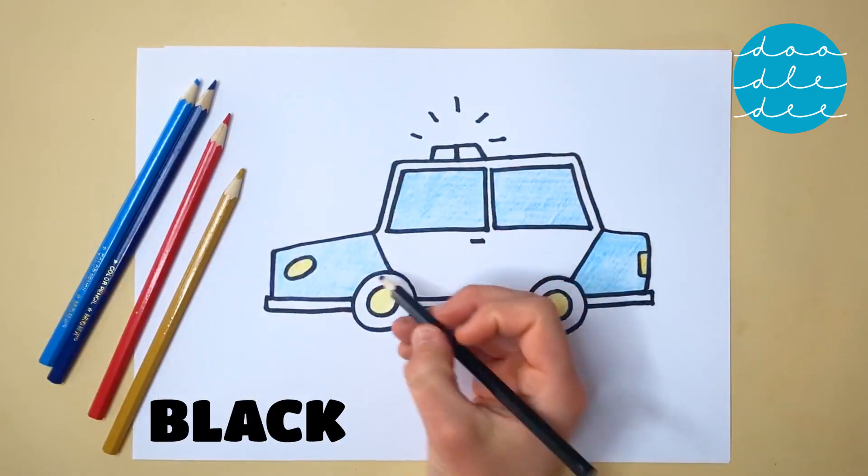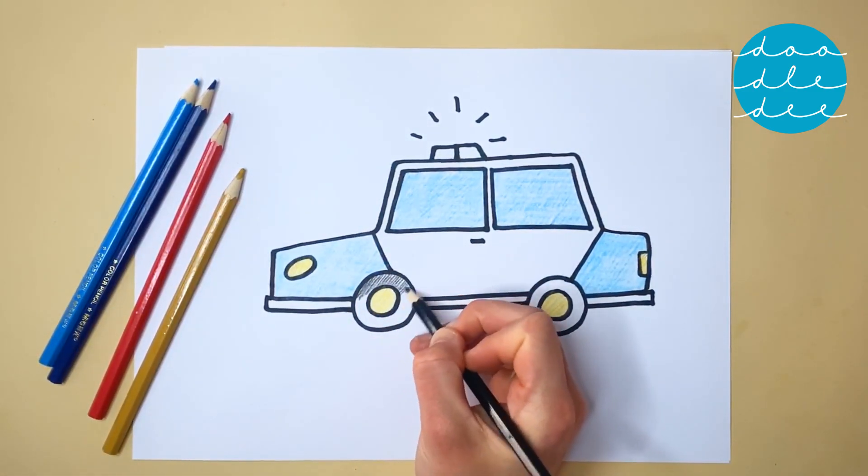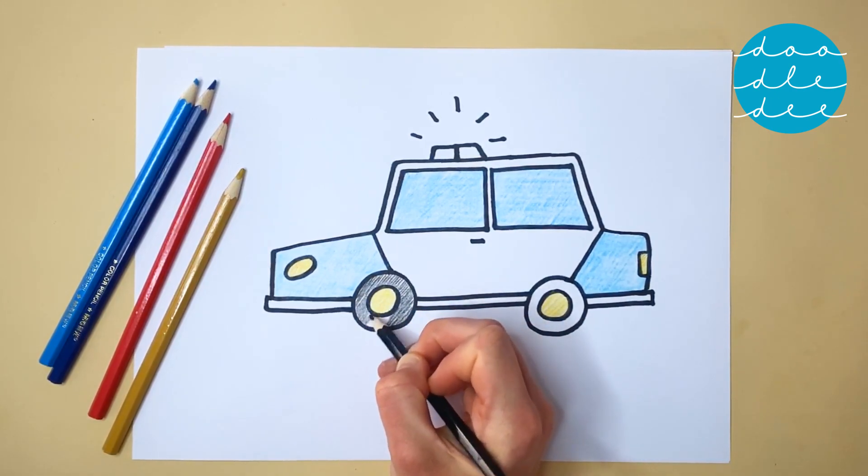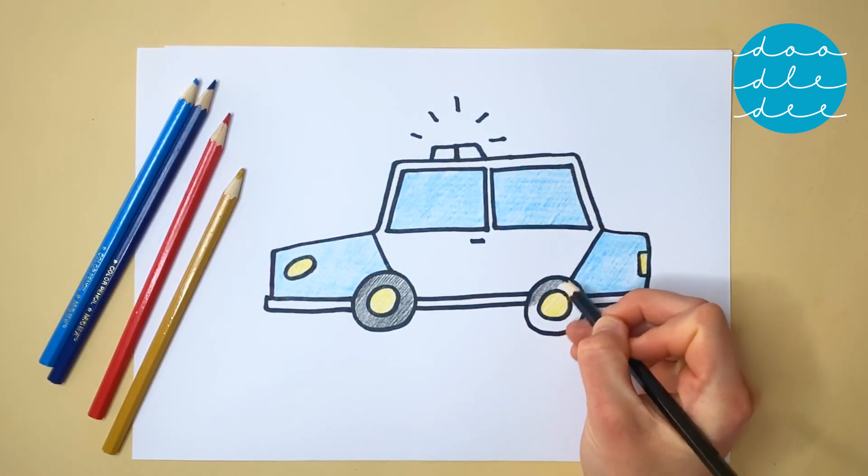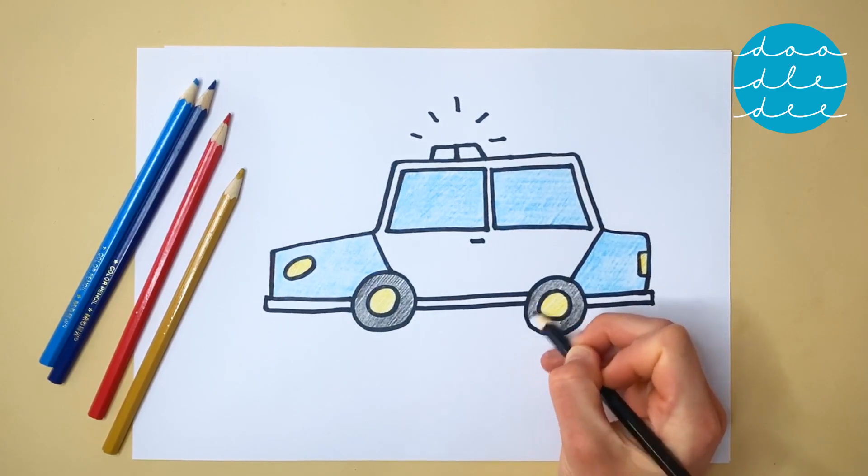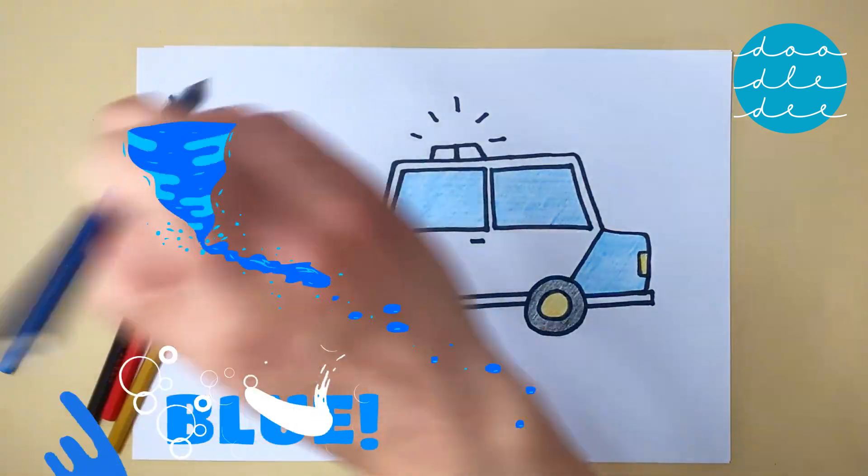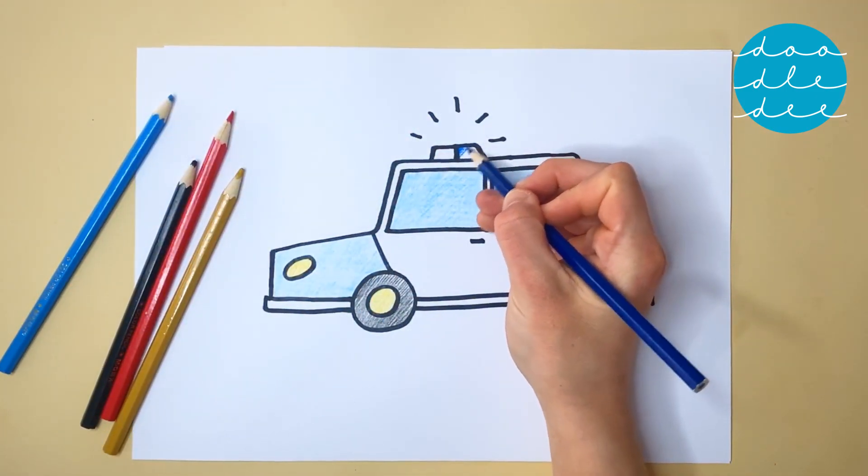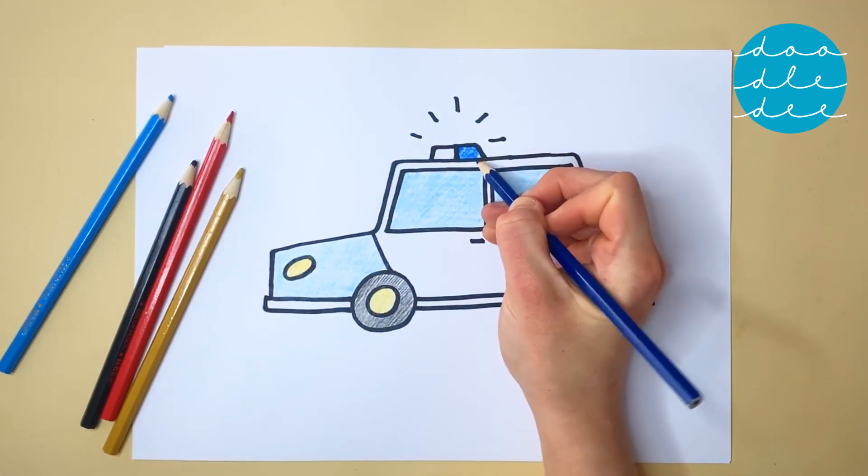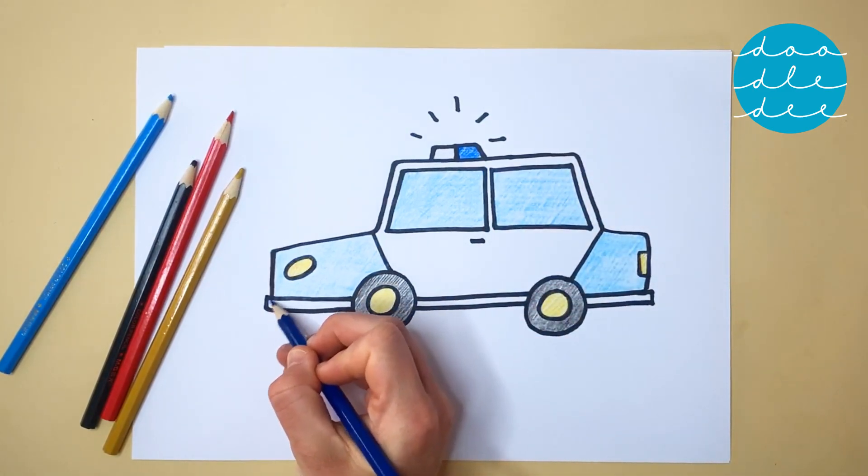Then some black for the tires. Two black wheels! Use dark blue for one half of our police car siren. And dark blue for the bumpers on the bottom.